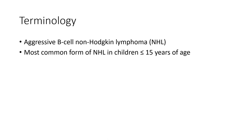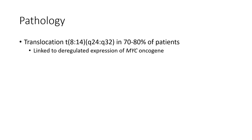Hello everyone. Today I'm going to show you about Burkitt lymphoma. It's an aggressive non-Hodgkin's lymphoma, and the most common form of non-Hodgkin's lymphoma in children less than 15 years of age. Pathology: it is due to translocation of chromosome 8 and 14, at Q24 and Q32, in 70 to 80% of patients, linked to dysregulated expression of the MYC oncogene.